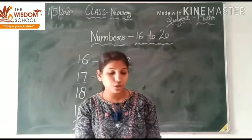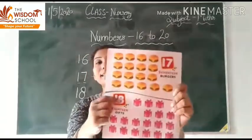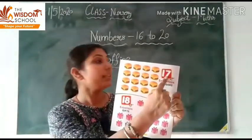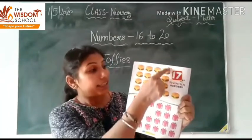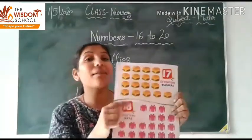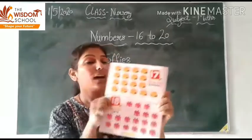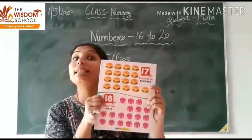16 toffees. Okay, next is 17. Here we go — here is 17. यह क्या है? आप लोग खाते हैना — Burger! How many burgers are there?